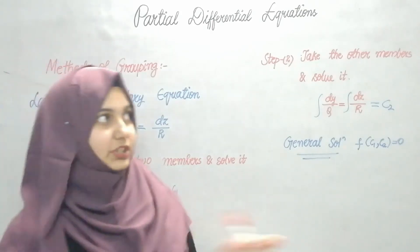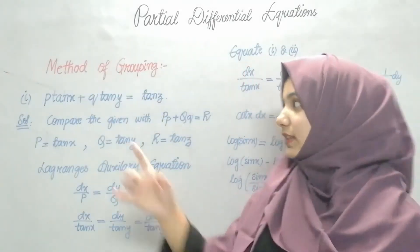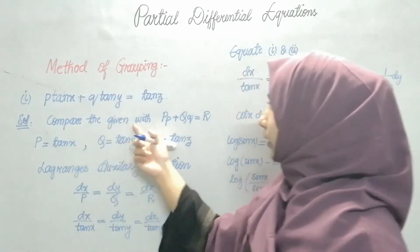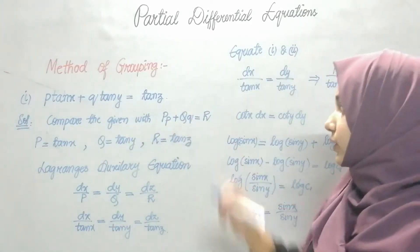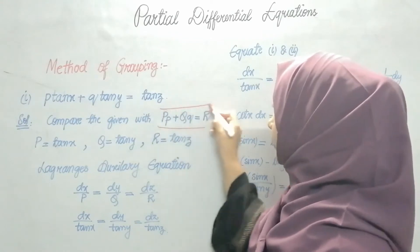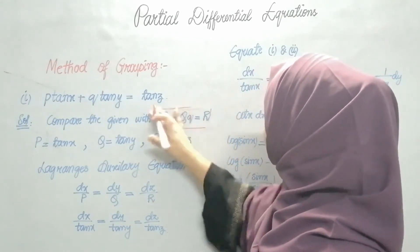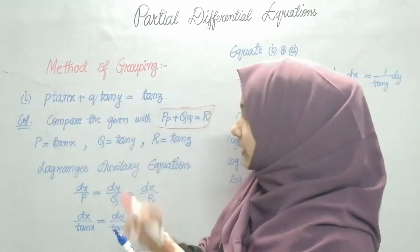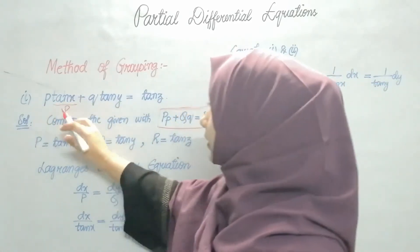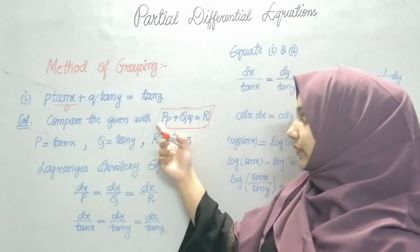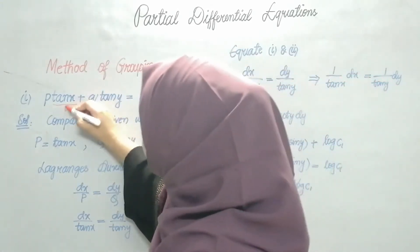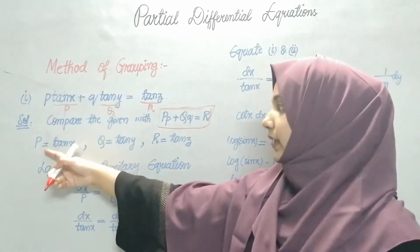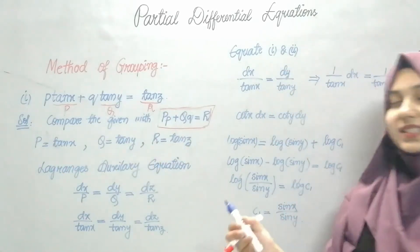The given question is: P tan x + Q tan y = tan z. To compare with the Lagrange's form, capital P · small p + capital Q · small q = R. The coefficient of small p is capital P, the coefficient of small q is capital Q. So here capital P = tan x, capital Q = tan y, and capital R = tan z.